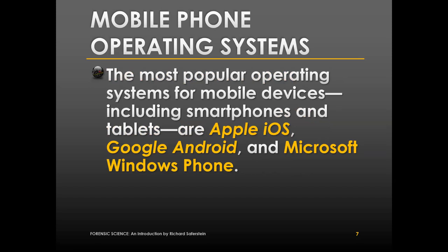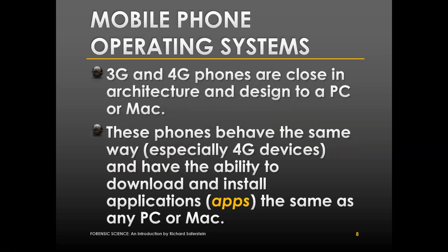The most popular operating systems for mobile devices, including smartphones and tablets, are Apple iOS, Google Android, and Microsoft Windows Phone. 3G and 4G phones are close in architecture and design to a PC or Mac — they are essentially handheld computers. These phones behave the same way and have the ability to download and install applications, just as you could download something onto a PC or Mac.